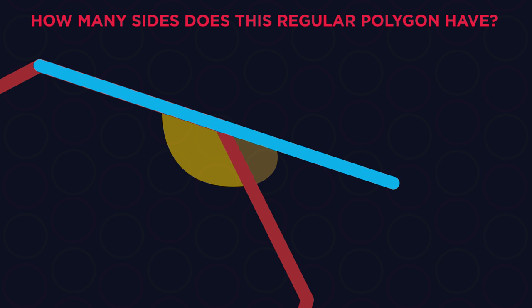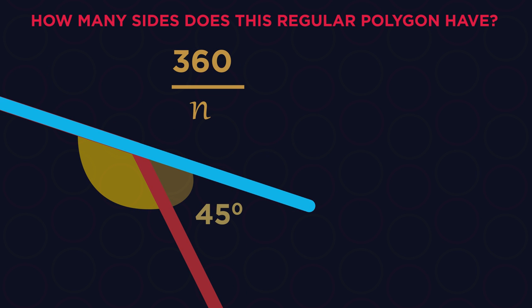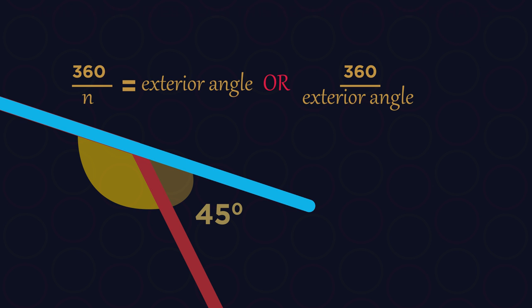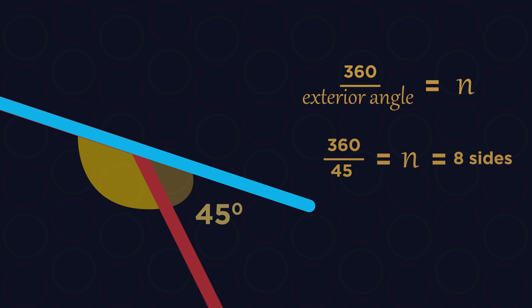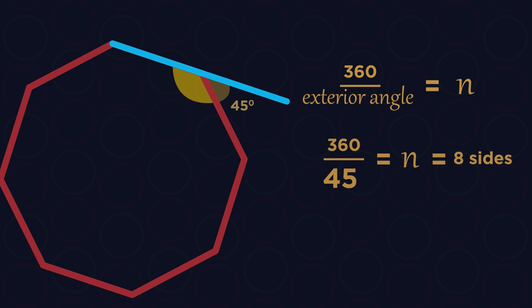This is actually really useful. We can use it to work out how many sides a regular polygon has. We're given the exterior angle of 45 degrees. As the exterior angles always add up to 360, we know that 360 divided by the number of angles will equal the exterior angle. Or, simple rearranging, 360 divided by the exterior angle will give the number of sides. So 360 divided by 45 means this is an octagon.